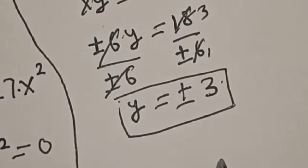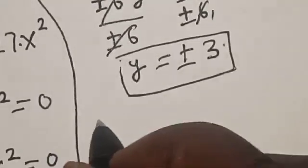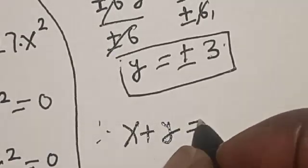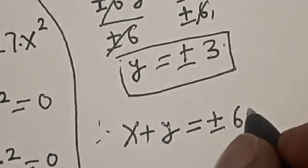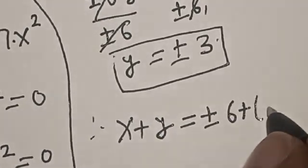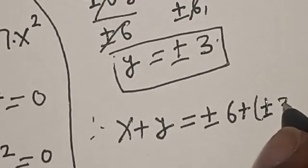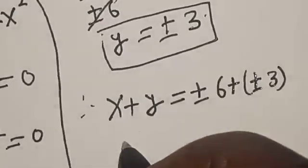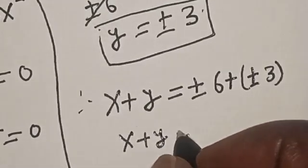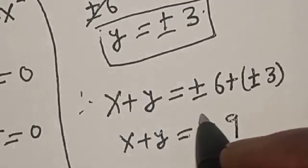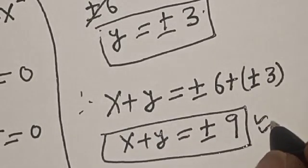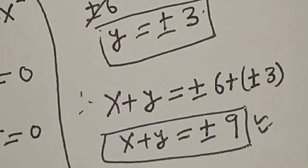The equation asks us to find the value of x plus y. Therefore, x plus y equals plus or minus 6 plus plus or minus 3, so x plus y is equal to plus or minus 9. That is our final answer. If you enjoyed the class, please don't forget to like, share, comment, and subscribe. Thank you.